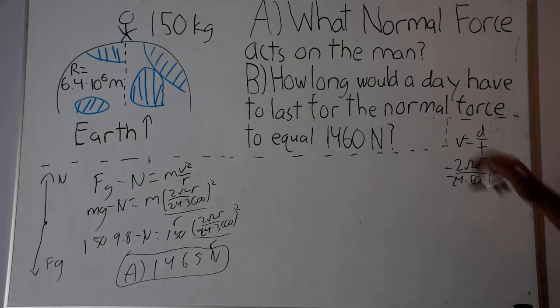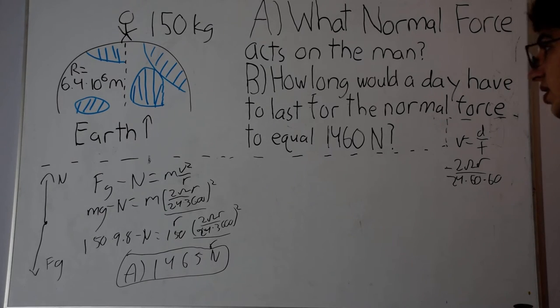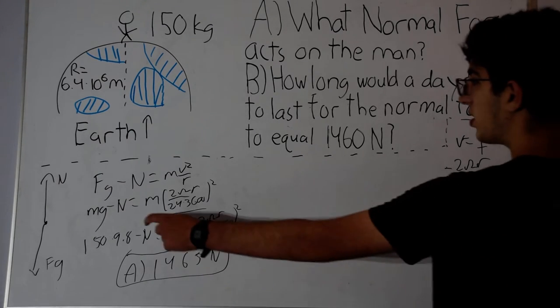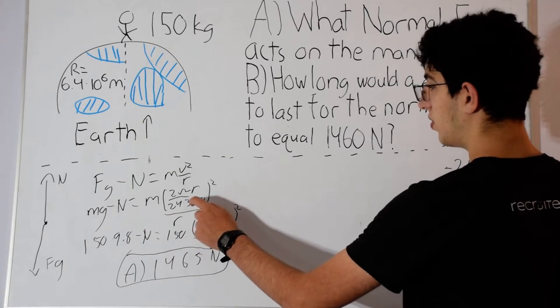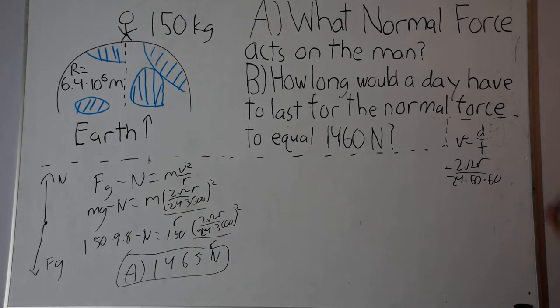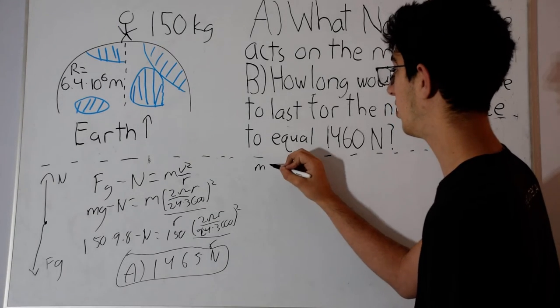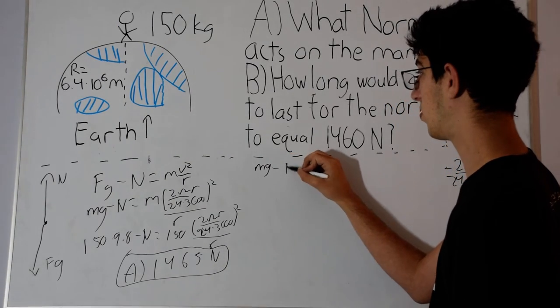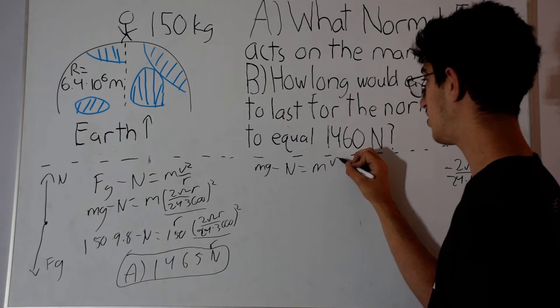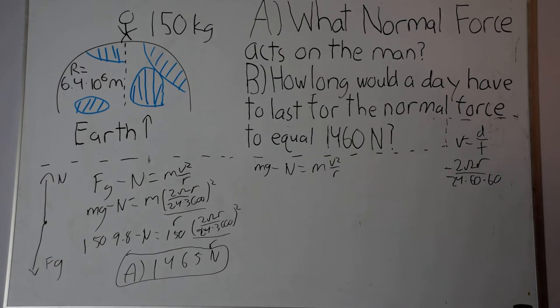Now let's move on to the second part of the question: how long would a day have to last for the normal force to equal 1460? This is actually very similar to our first question, except now we know what the normal force is but we don't know what the time is. So we can use the same equation: Mg minus normal force equals Mv squared over R, and we know what Mg is.